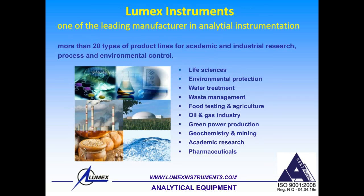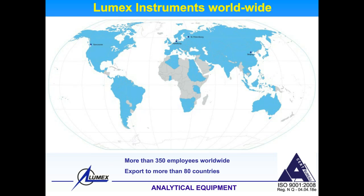First of all, let me introduce my company, LUMEX Instruments. This is one of the leading manufacturers in analytical instrumentation and we have more than 20 types of product lines. On this slide you see a map, and everything colored in blue represents the countries to which we export our products. Our headquarters are located in Vancouver, Canada and in St. Petersburg, Russia. We have important sales and research offices in Hamburg, Germany — our most important European office — and in Beijing, China. About 350 highly skilled employees work in LUMEX worldwide, and we are proud to export our products to more than 80 countries.